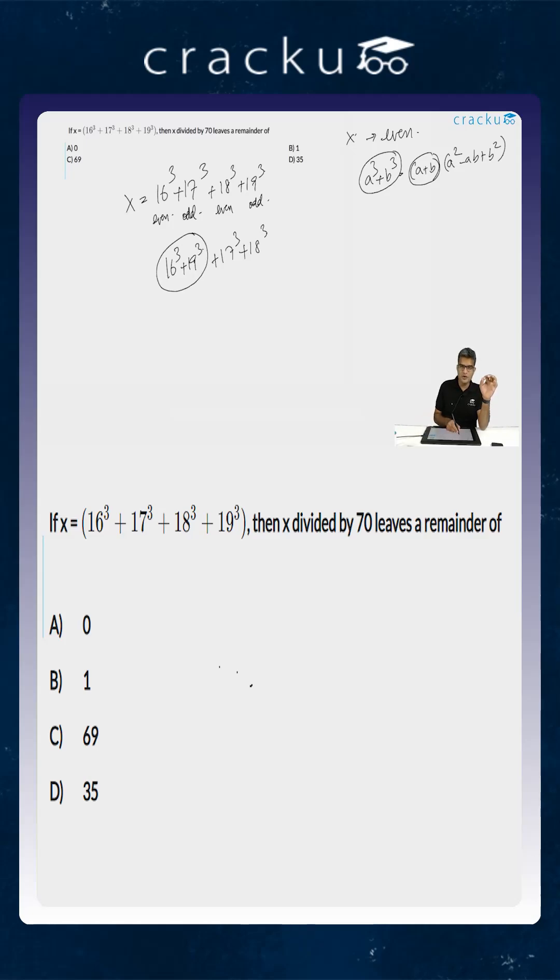So for 16 cube plus 19 cube, one of the factors is 16 plus 19 which is 35. Similarly, for 17 cube plus 18 cube, one of the factors is 17 plus 18 which is 35. So x is also a multiple of 35.